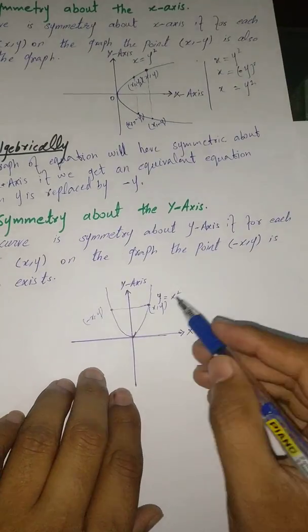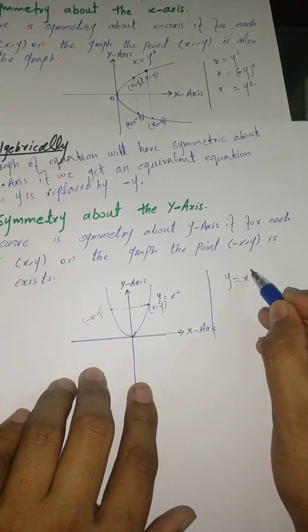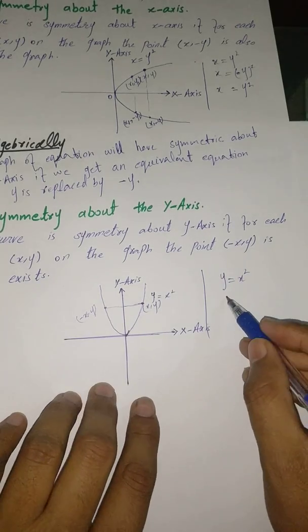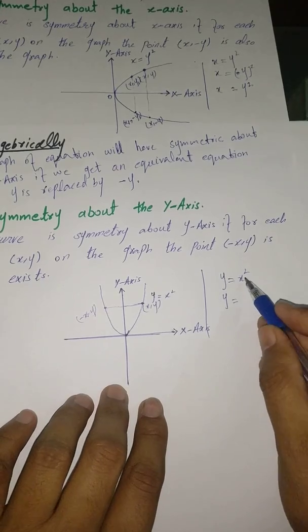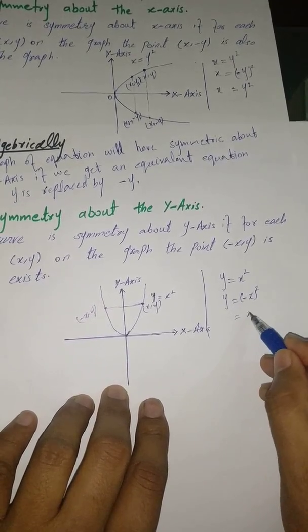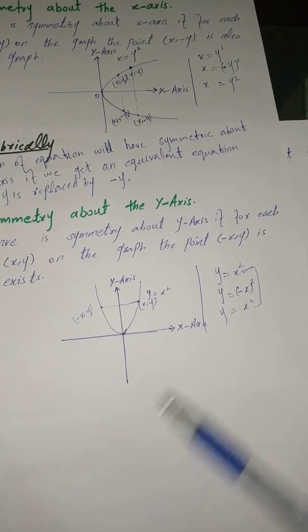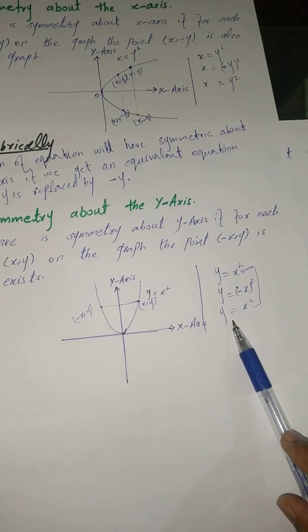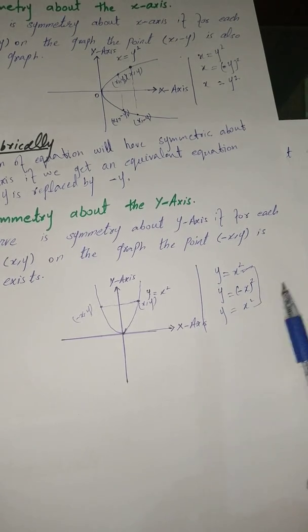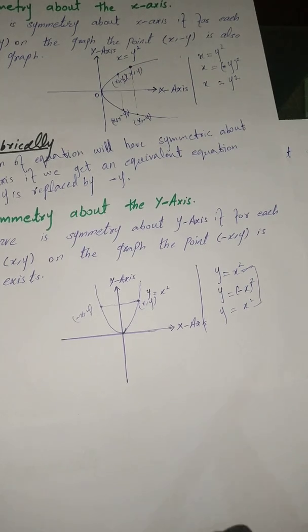Whenever we replace x by −x in a given equation and it gives us an equivalent equation, the graph is symmetric about the y-axis. For example, y = x² — when we replace x by −x we get y = (−x)² = x², which is the same equation. So we say the graph of this equation is symmetric about the y-axis.